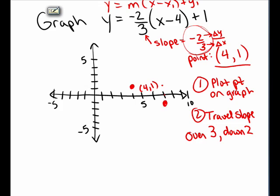Over 3, down 2. And I can do it again — over 1, 2, 3, down 1, 2 — and plot another point on the graph. So here is a sketch of the line y equals negative 2 thirds times the quantity x minus 4 plus 1.